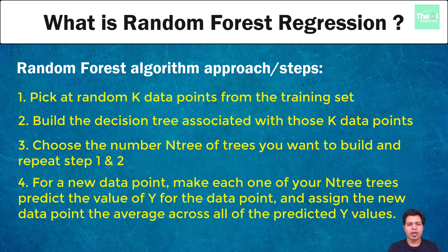Step four: for a new data point, make each one of your Ntree trees predict the value of Y for the data point, and assign the new data point the average across all of the predicted Y values. As a part of this step you get multiple predictions from these decision trees. So basically we take all these decision trees to get the predictions - that is, each one of them predicting the value of target variable Y for the new data point for whom we want to get prediction. The algorithm assigns the average value of all the decision trees' predicted Y values to this new data point.